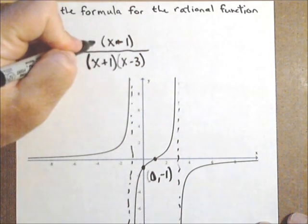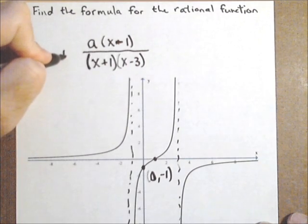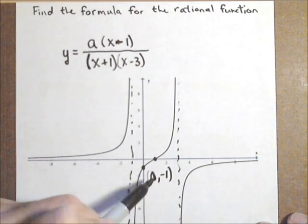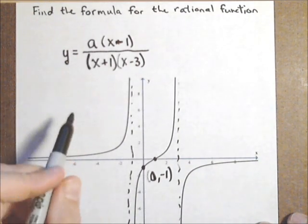That's going to help us find any factor, we'll call it a, and it might be out in front. Because we know that when x is 0, the y value has to be negative 1.